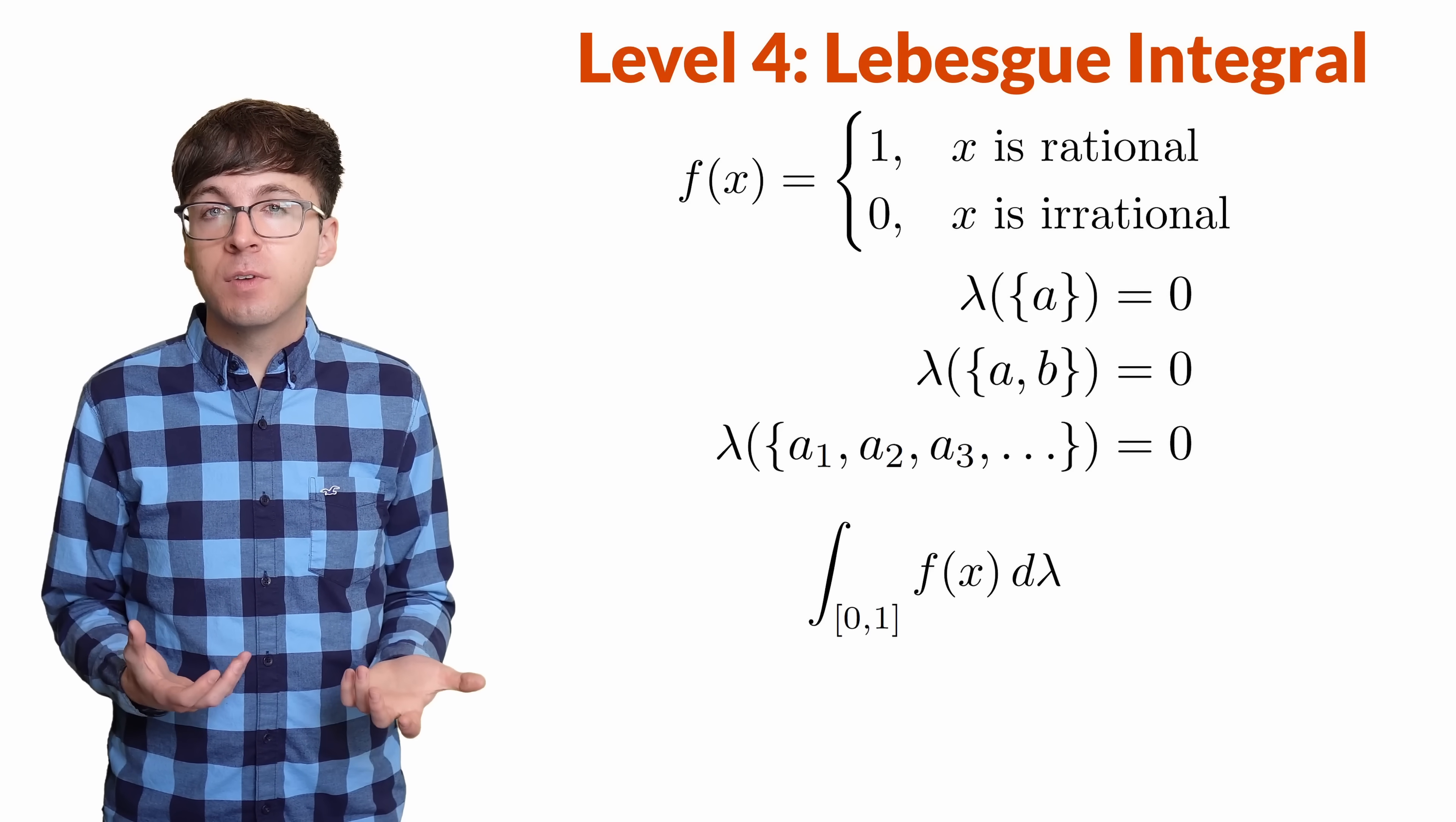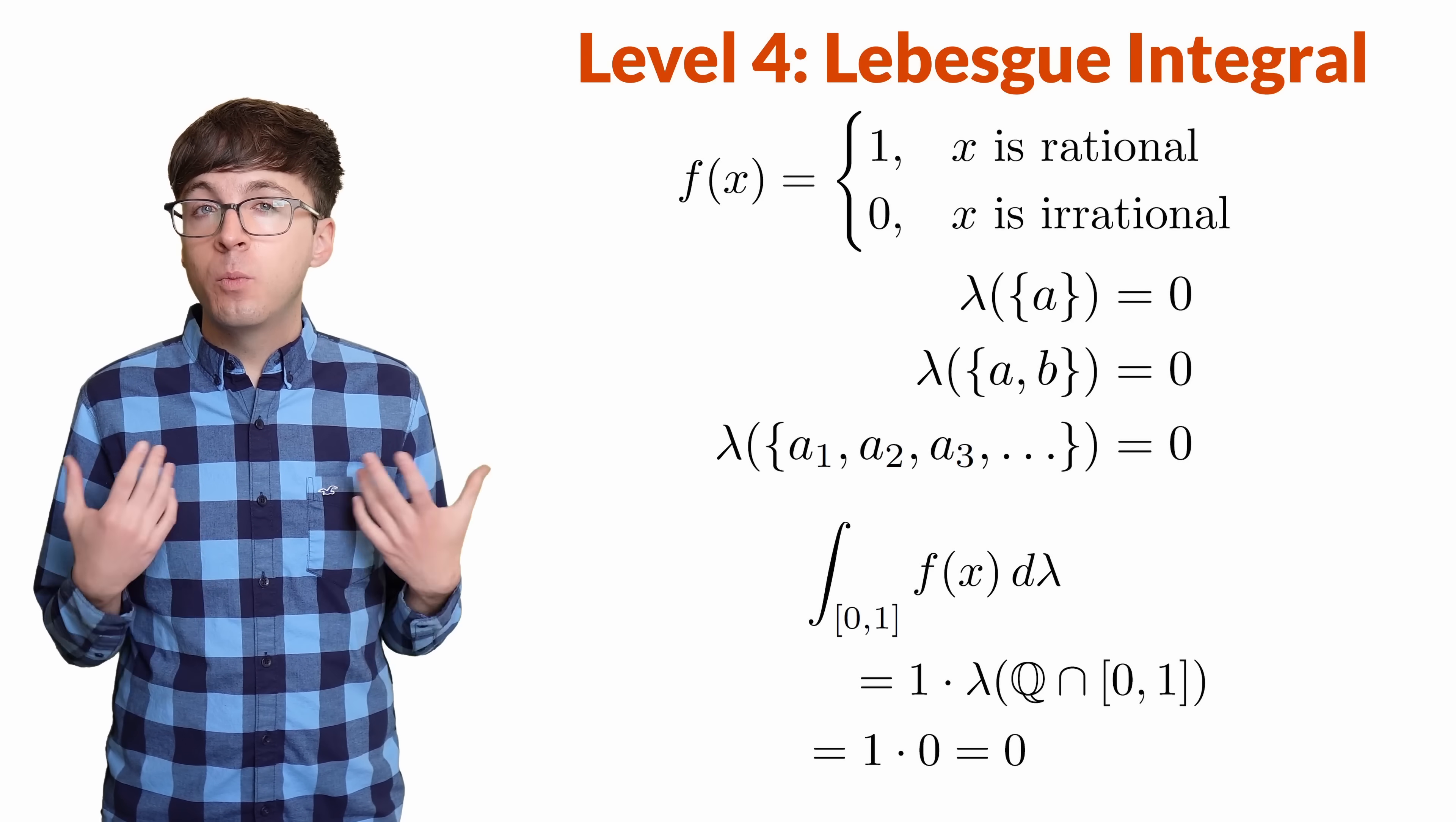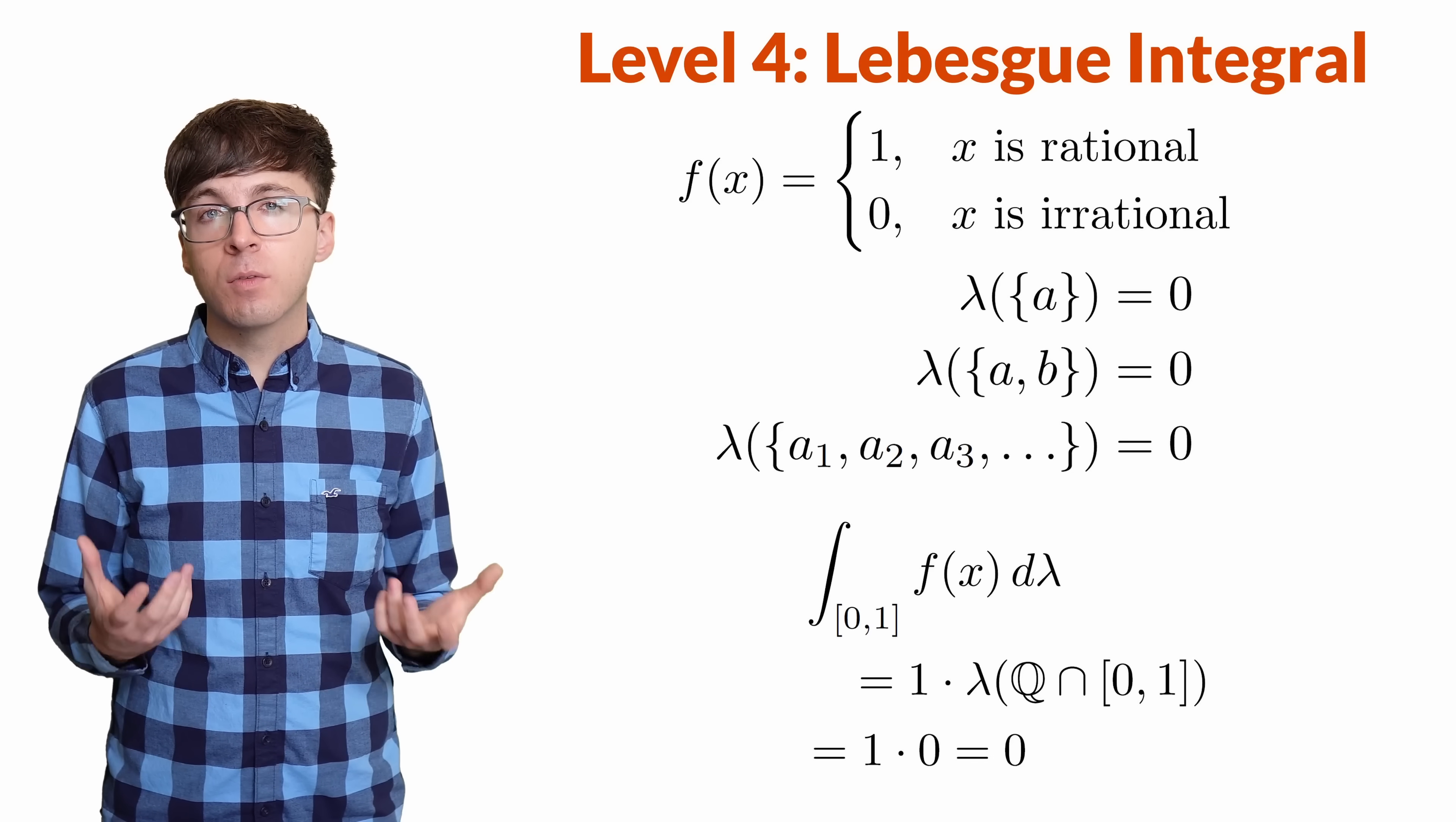So the Lebesgue integral of this function is 1 times the Lebesgue measure of the set of rational numbers, which is 0. So this Lebesgue integral is 0. That means when we pick a number uniformly at random between 0 and 1, there's a probability 0 that we pick a rational number. We get an irrational number every time.